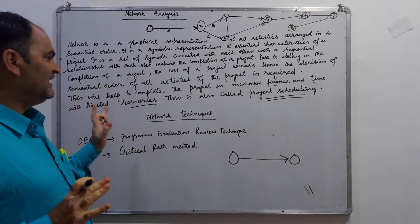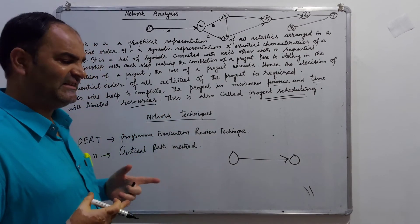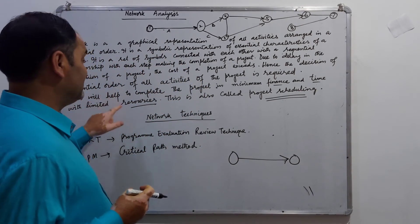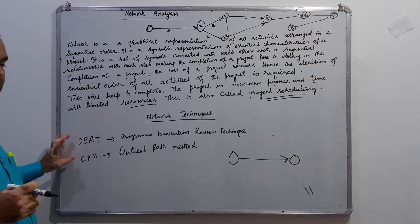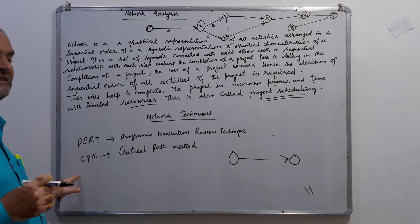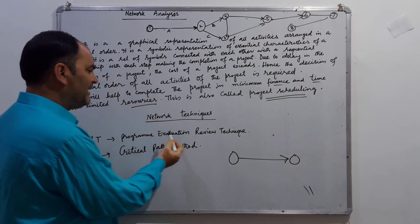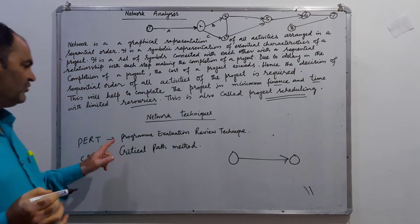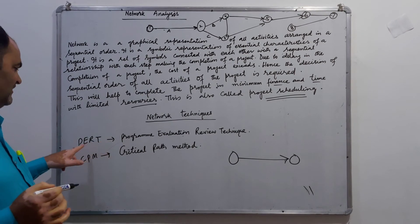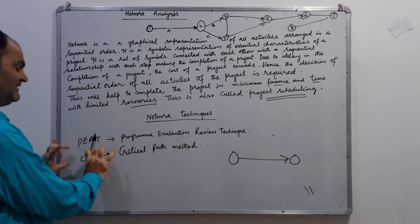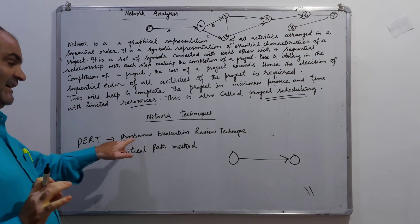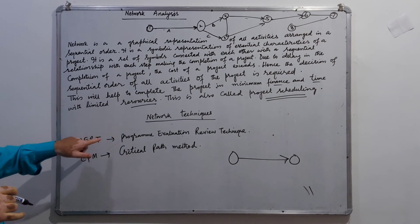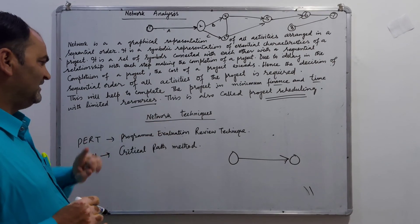Network analysis is a technique — in fact, there are various techniques of network analysis. The mostly used techniques are PERT — Program Evaluation and Review Technique — and CPM — Critical Path Method. We will discuss these techniques of network analysis in the next lectures.